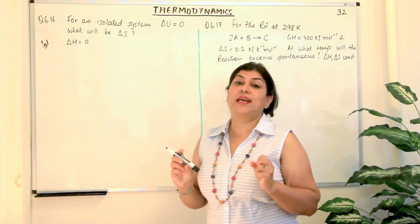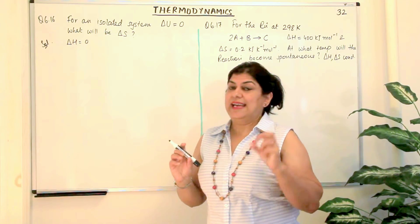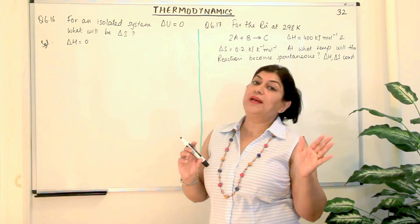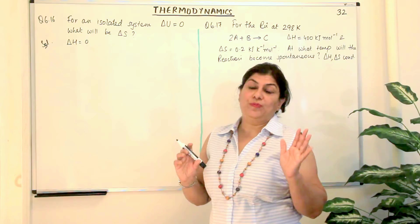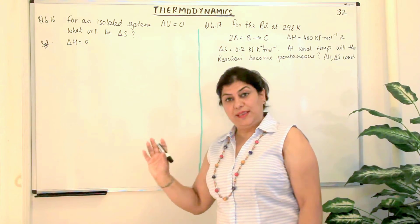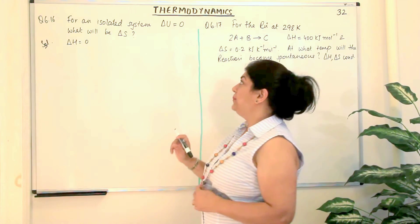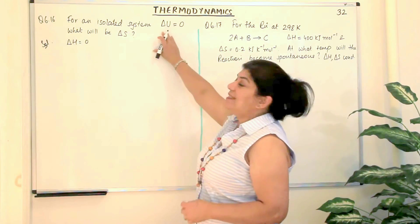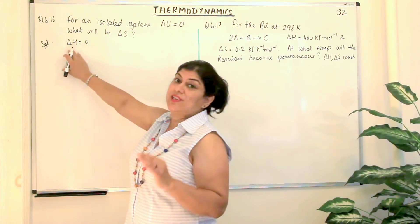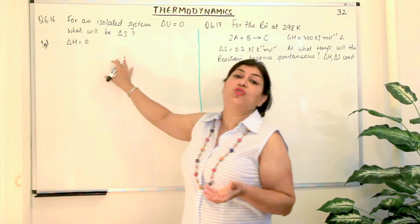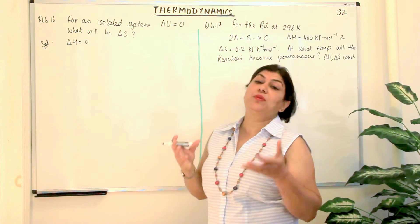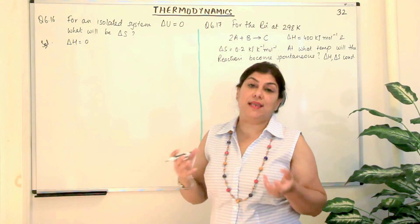And what does the first law of thermodynamics tell us? It tells us that delta U is equal to Q plus W — that is, it is the sum of the heat exchange and the work done. Now since delta U is 0, the heat exchange delta H is 0, and work done would also be equal to 0. Yet in the system, the process is taking place.